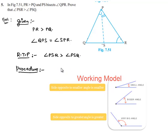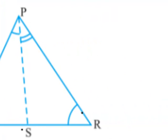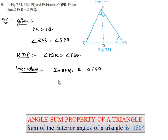So now let us consider triangle PQS and triangle PSR. In these triangles, the sum of angles is equal to 180 degrees. So let us write angle SQP plus angle PSQ plus angle QPS is equal to 180 degrees. Let this be our first equation.